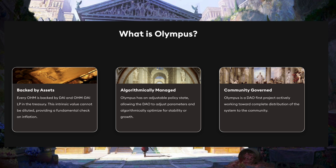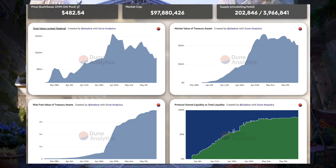Just to recap, Olympus DAO is backed by assets, algorithmically managed, and community governed.